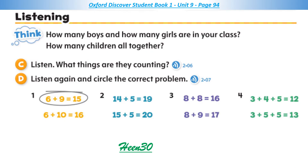Page 94. Communicate. Listening. C. Listen. What things are they counting? 1. I have 6 pens. You have 9 pens. How many pens do we have? 2. Our teacher has 15 rulers. We have 5 rulers. How many do we have together? 3. The girls have 8 pencils. The boys have 9 pencils. How many pencils do they have together? 4. May has 3 erasers. John has 4 and Ava has 5. How many erasers do they have?